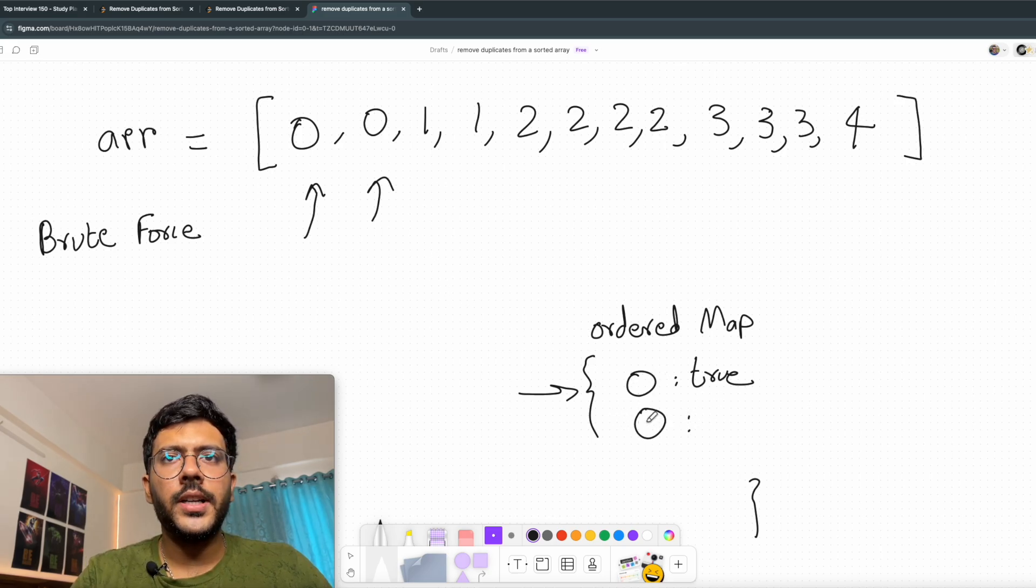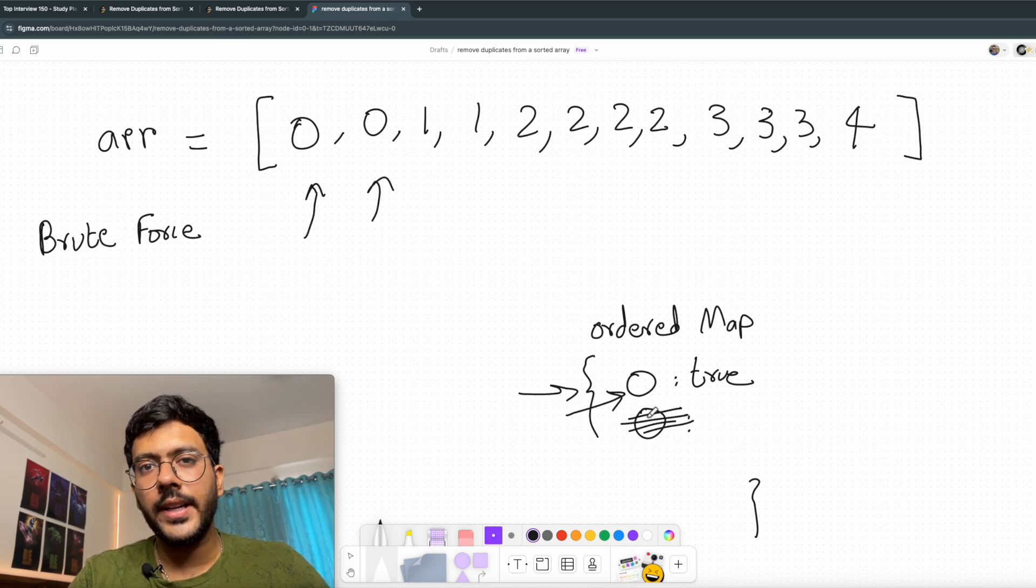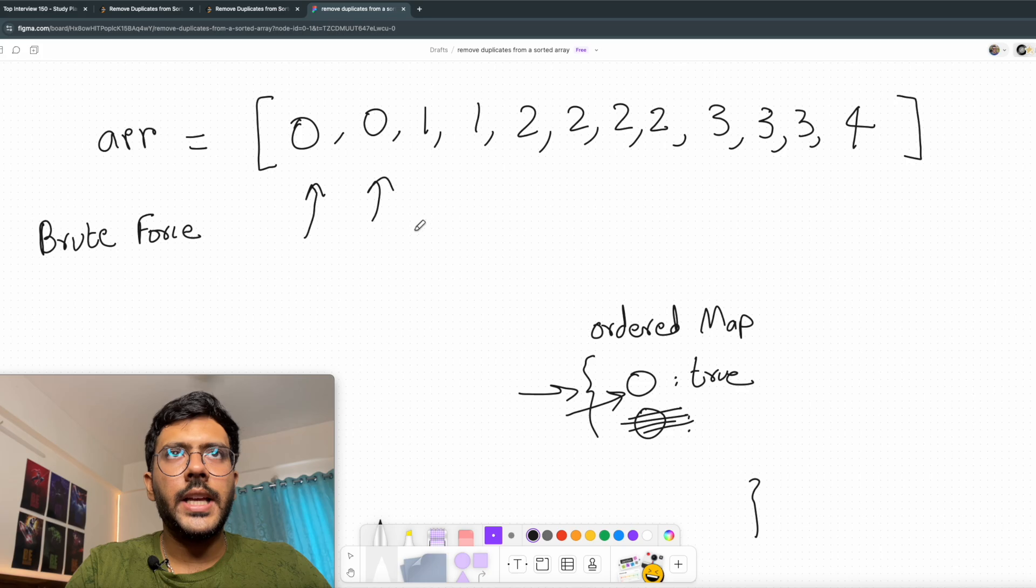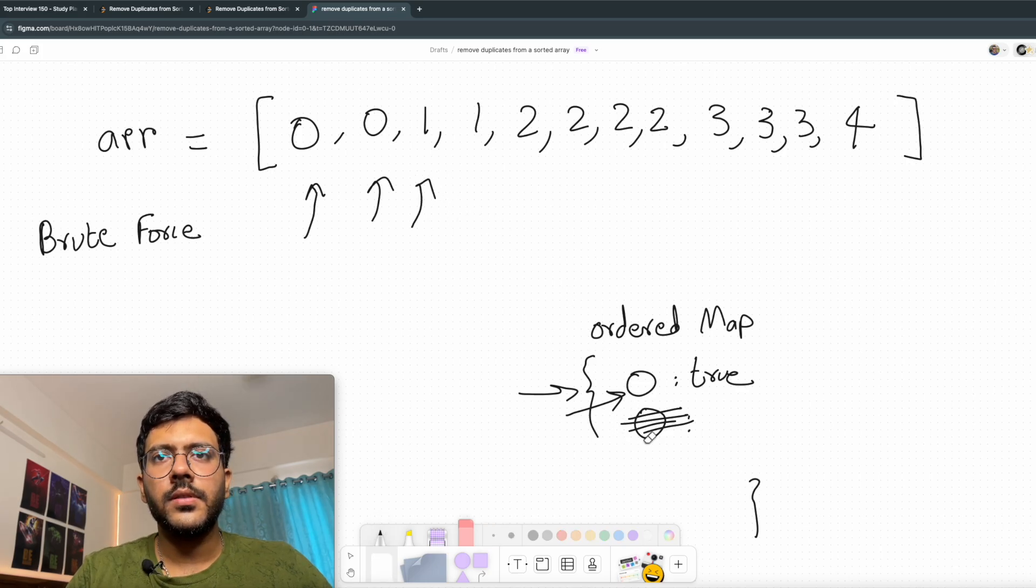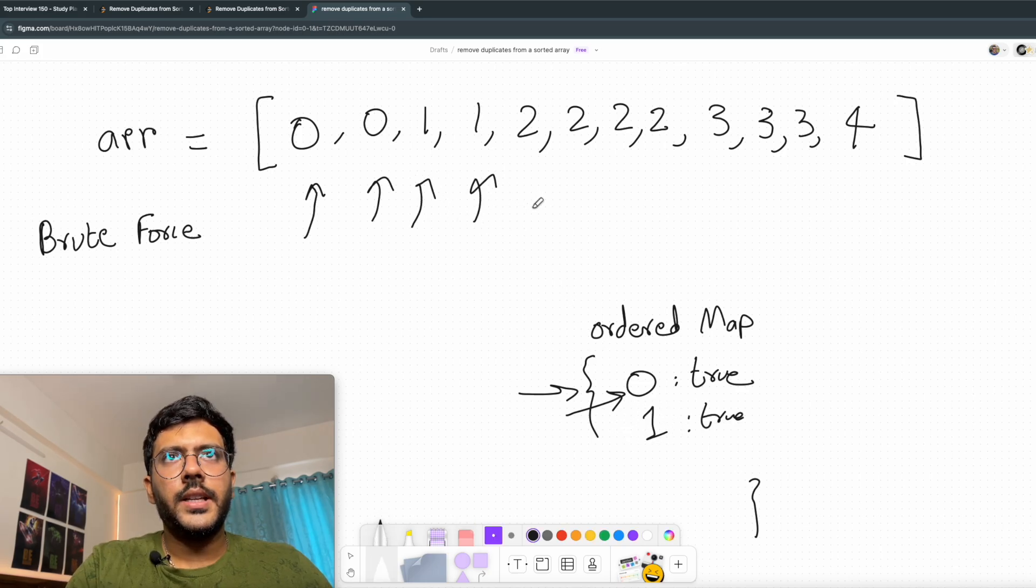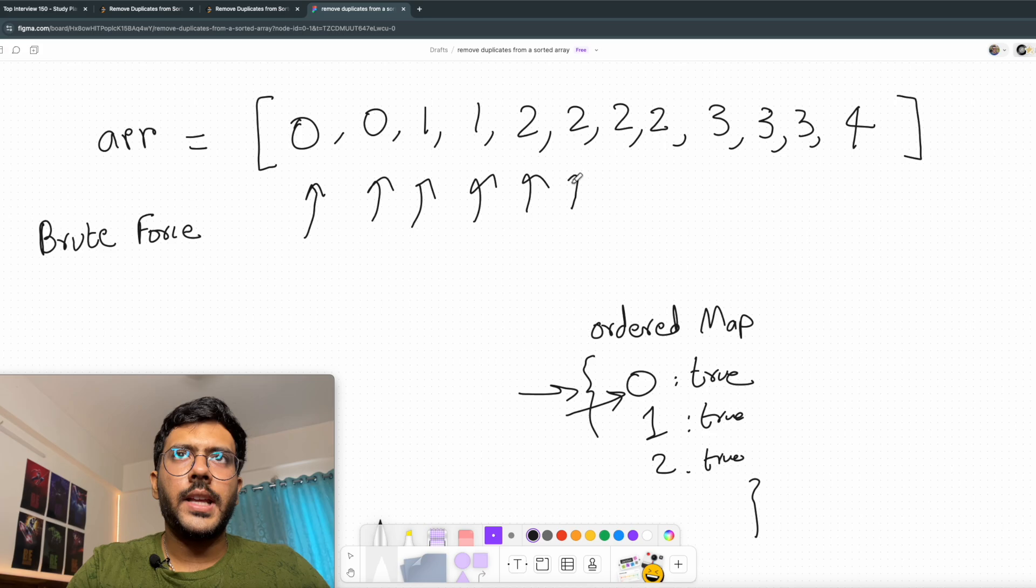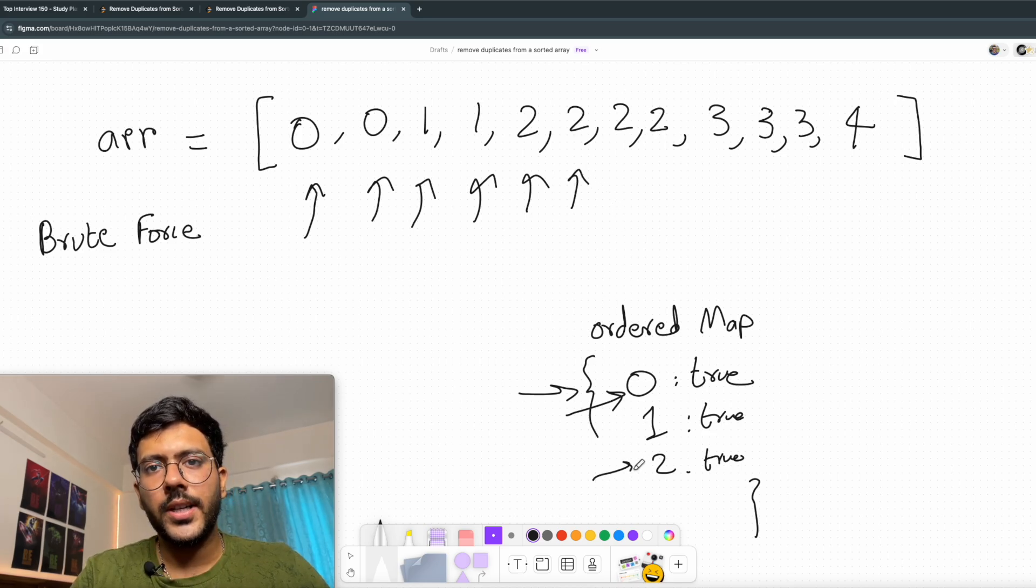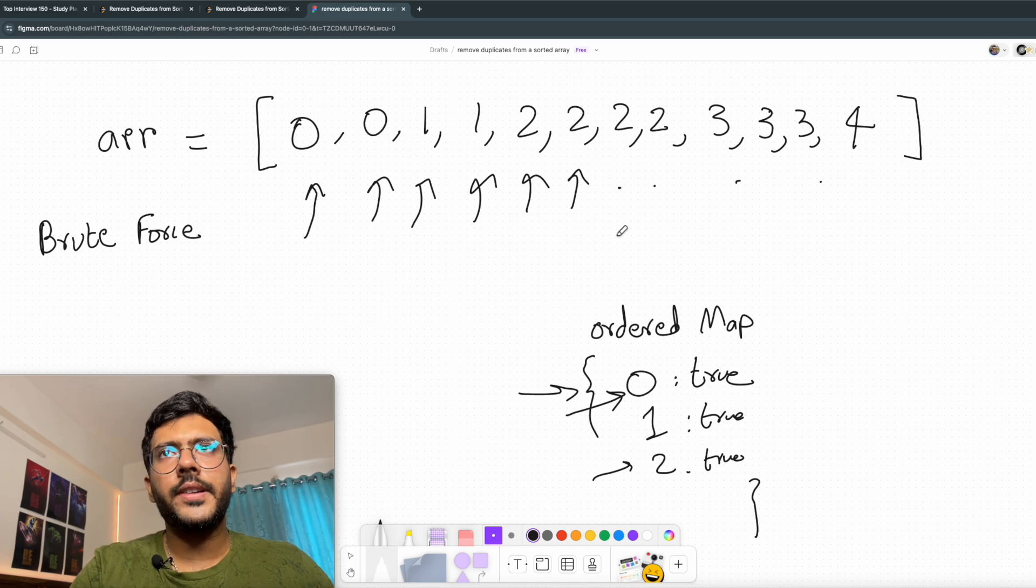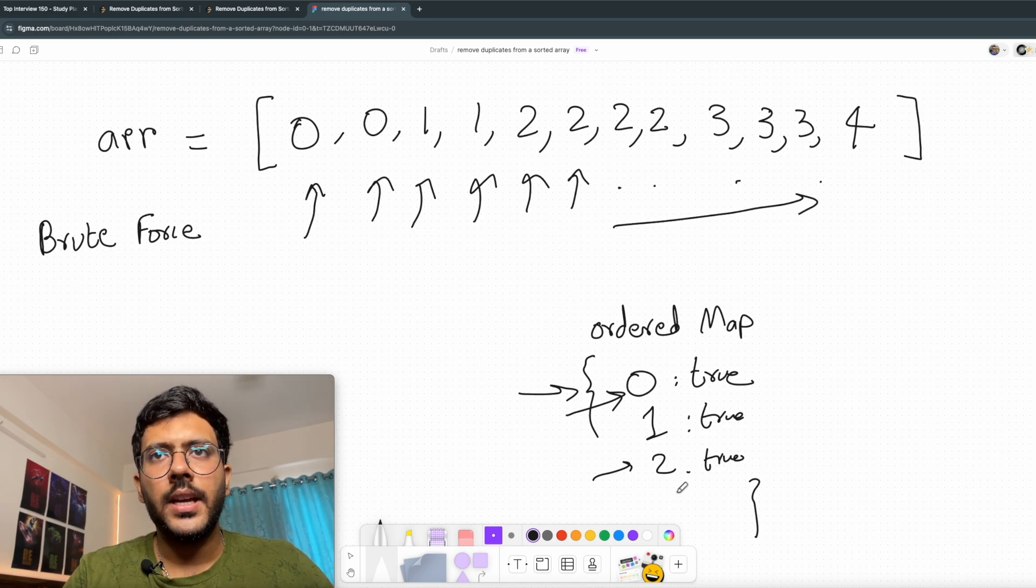Now since my map already has 0, it will overwrite this location. It will not create a new element. So then I go to 1. I put 1 in my map. Then I see 2 is a new element, so 2 gets entered in the map. Next time 2 is already present, so it does nothing. And it will go on till we traverse the entire array.